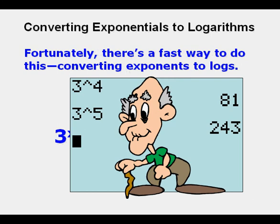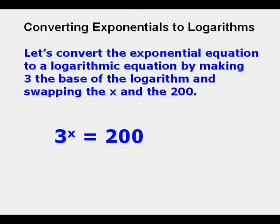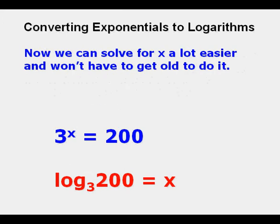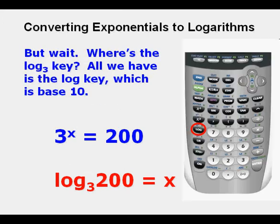But fortunately there's a fast way to do this by converting exponents to logs. Let's convert the exponential equation below to a logarithm equation by making 3 the base of the logarithm and swapping the x and the 200. And so here we've done that. So log base 3 of 200 equals x. And so we can solve for x a lot easier. We don't have to get too old to do it.